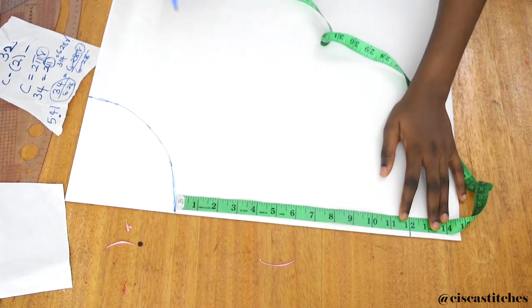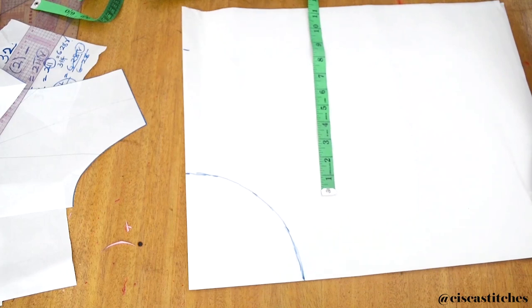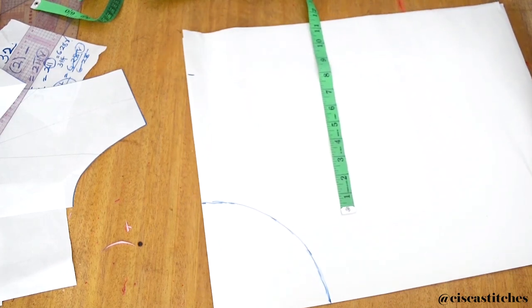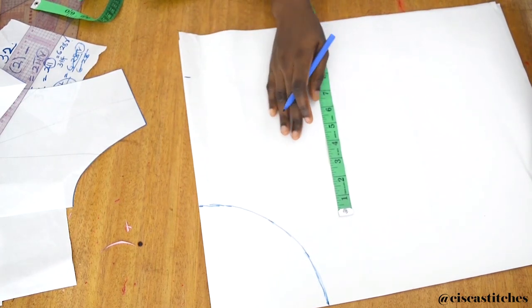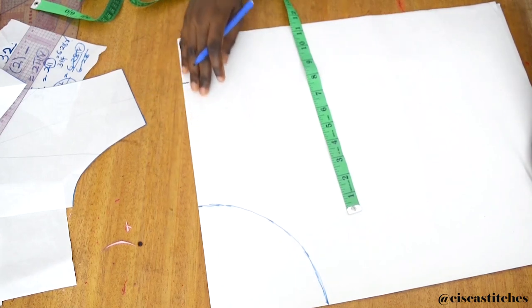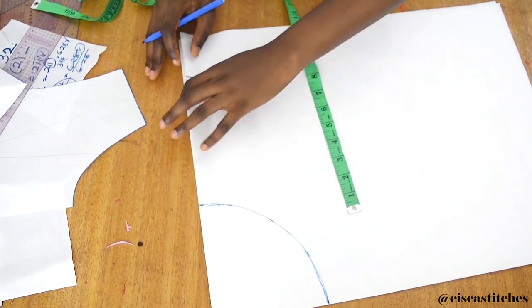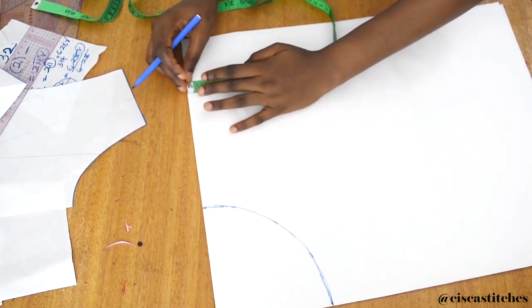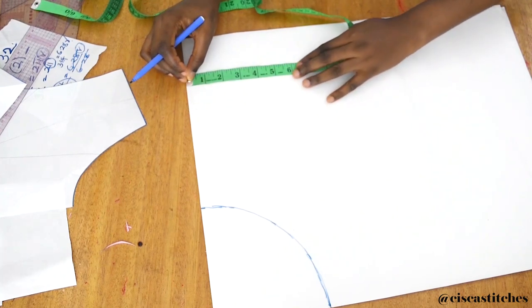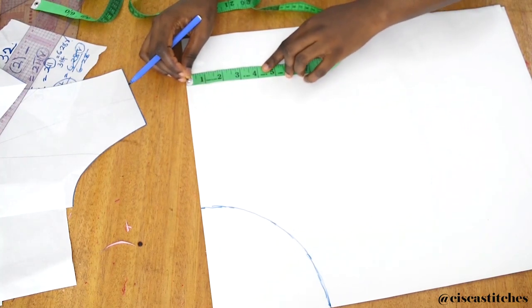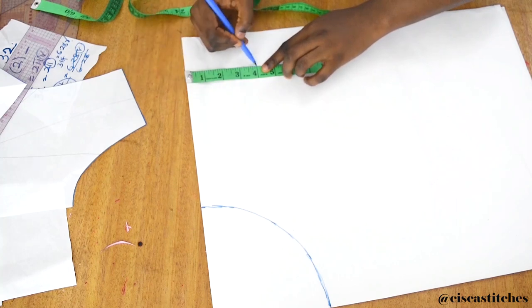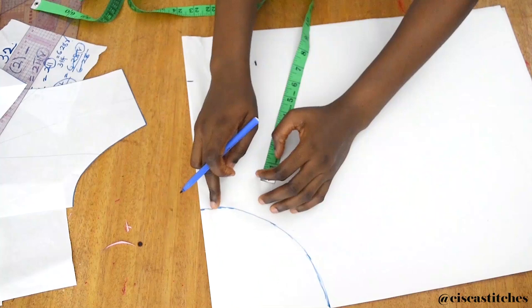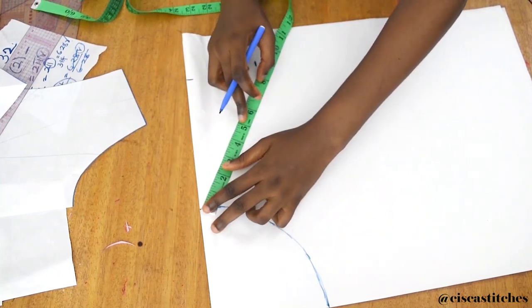To get the effect of your peplum standing like that without it having folds, what I'm going to do is cut off some bits, especially at the side seam area. I'm going to come right here from the side seam area and mark about 4 inches.